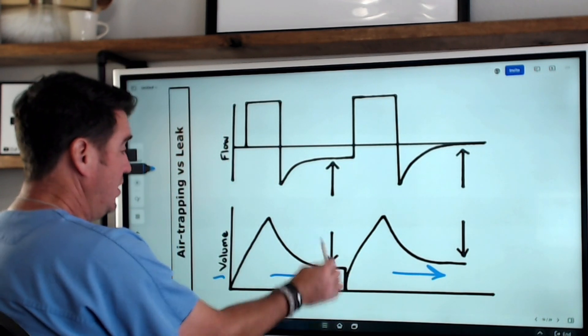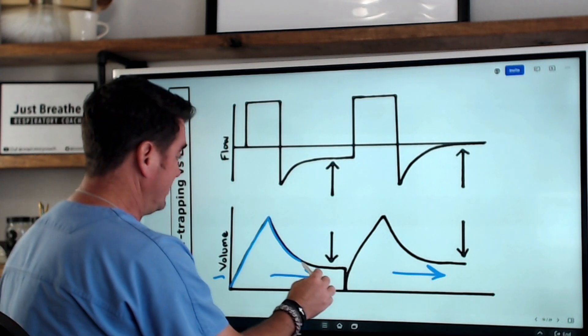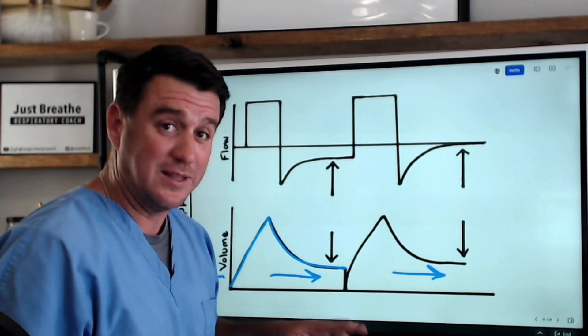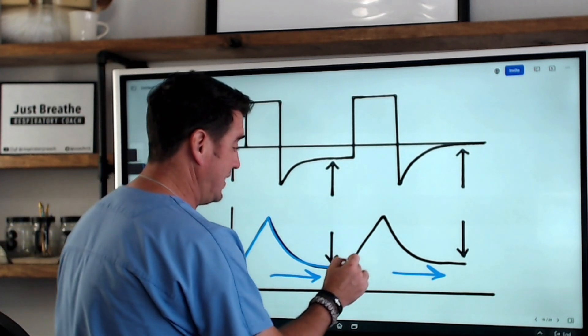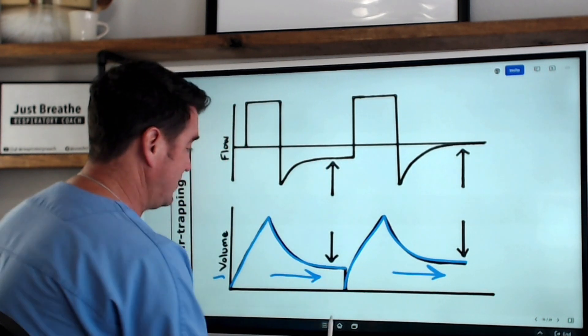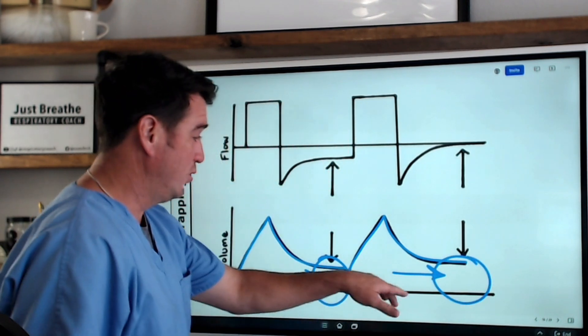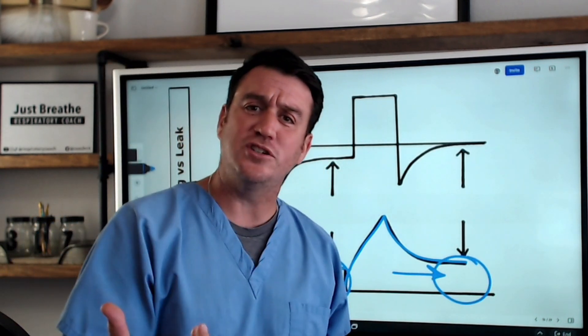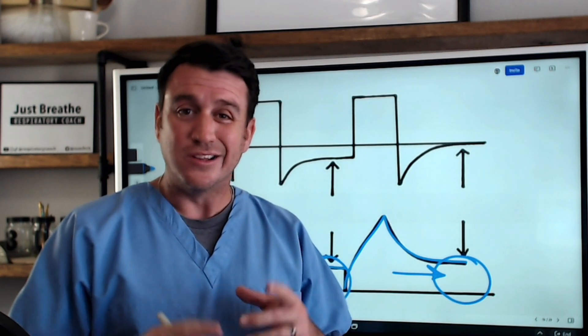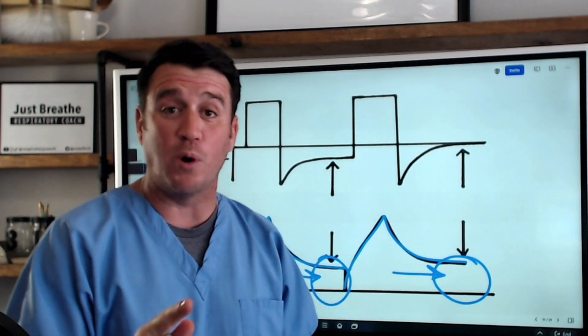This is again the volume waveform. Volume goes in, volume comes out, but it does not return to baseline. This is going to be a problem. Same thing here. In, out, does not return to baseline. This and this, two different situations. Now what do I do when the volume doesn't return to baseline? Well, the truth is it can be one of two things. You're going to want to remember both of them.